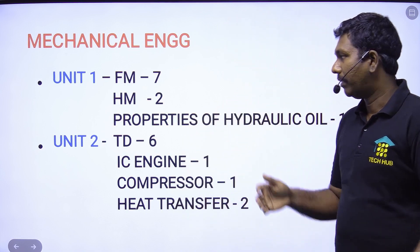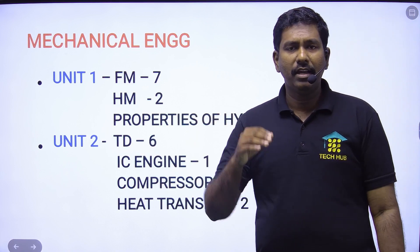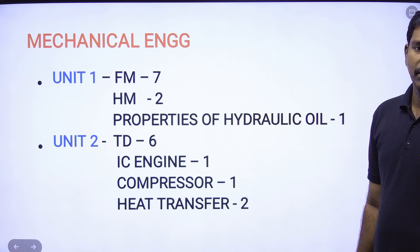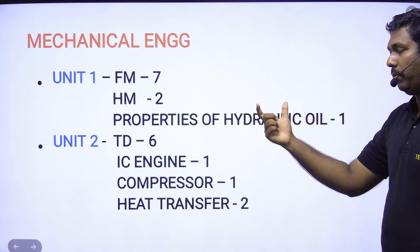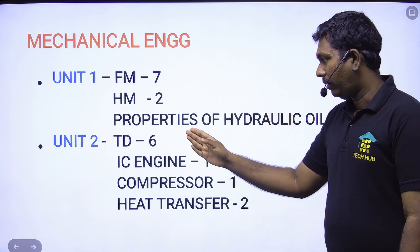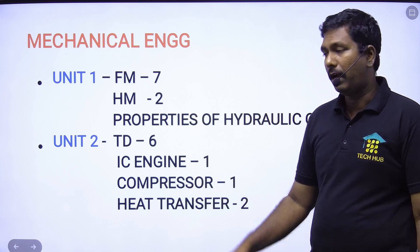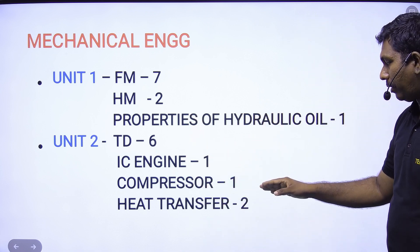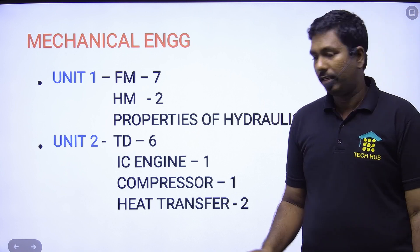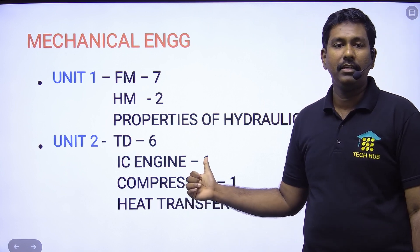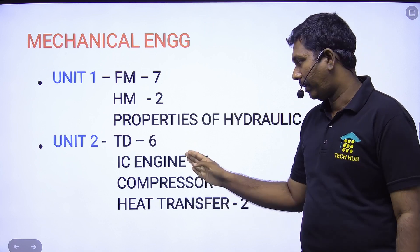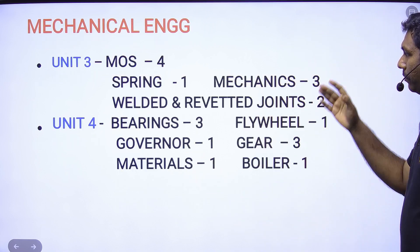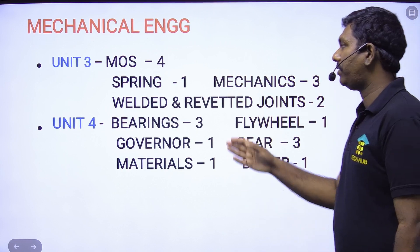In the first module, we have 10 marks. If we have 10 marks divided by 8 marks FM — two HMN coefficients, one hydraulic oil property. This is thermodynamics: 6 coefficients thermodynamics. Ice engine, compressor and heat transfer are 2. This is module 5. The module 3 is 4 marks.